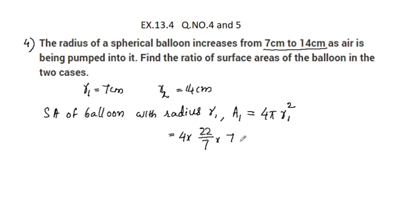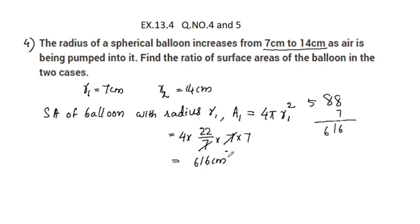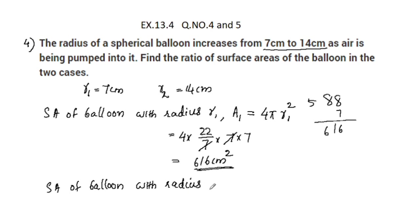r is 7, so r squared is 7 into 7. The 7s cancel: 22 into 4 is 88, and 88 into 7 is 616. So A1 is equal to 616 centimeter square. This is the surface area of the balloon with radius r1.